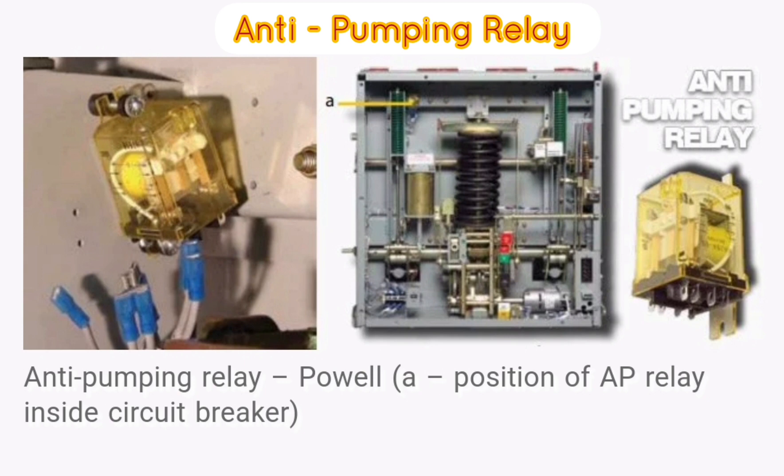The anti-pumping relay is basically a NO contact. This means when the circuit breaker is in the closed condition, the relay will be in NO condition, and when the circuit breaker is in the open state, the relay will be in NC condition.